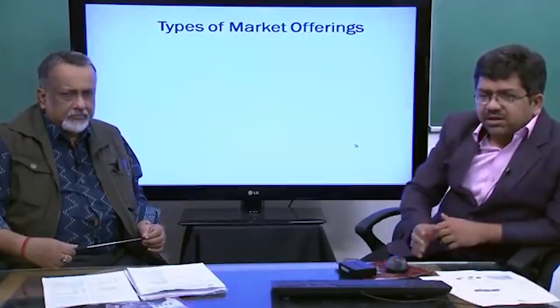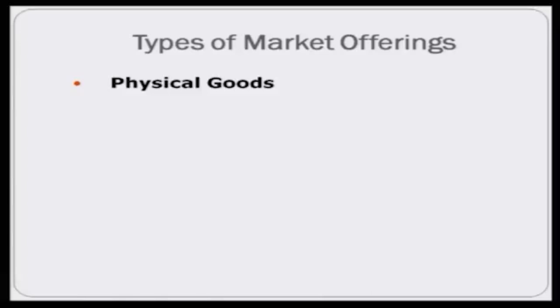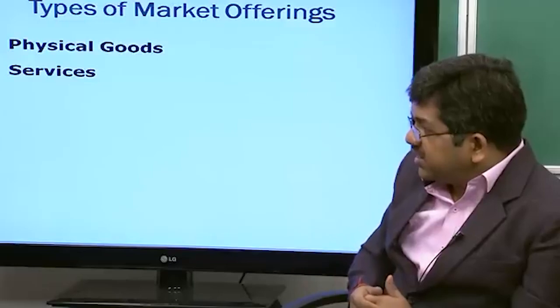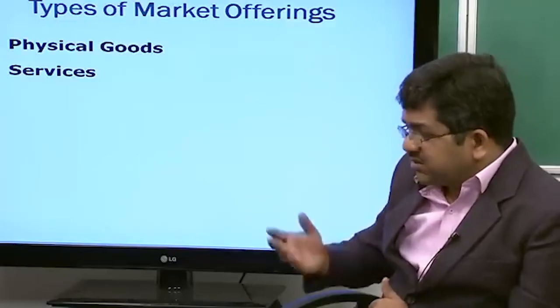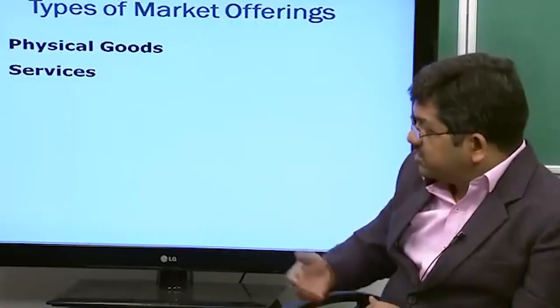Now we will briefly talk about the different types of offerings provided by sellers in the market. One very common market offering is physical goods — all the output of the manufacturing sector, including consumer durables. Then there are services. Today, if you look at the GDP of developed economies or even India, services dominate physical goods. In India it is roughly 60 to 40 — services versus physical goods — and in developed nations the ratio is even more tilted towards services.